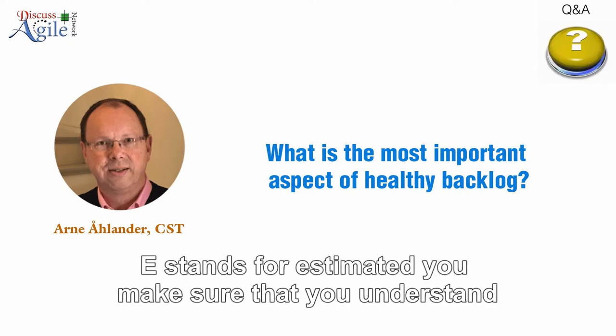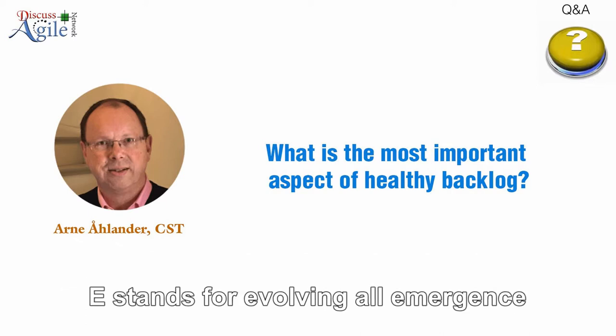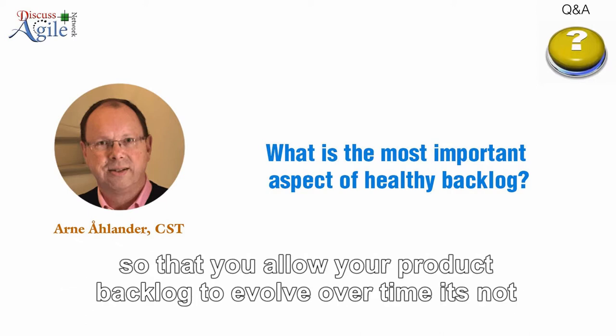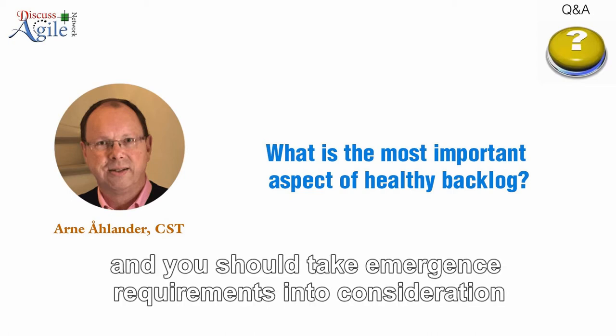E stands for estimated — you make sure that you understand approximately how long it will take to do the things on the product backlog. The second E stands for evolving or emergent, so that you allow your product backlog to evolve over time. It's not fixed from the beginning, and you should take emergent requirements into consideration.